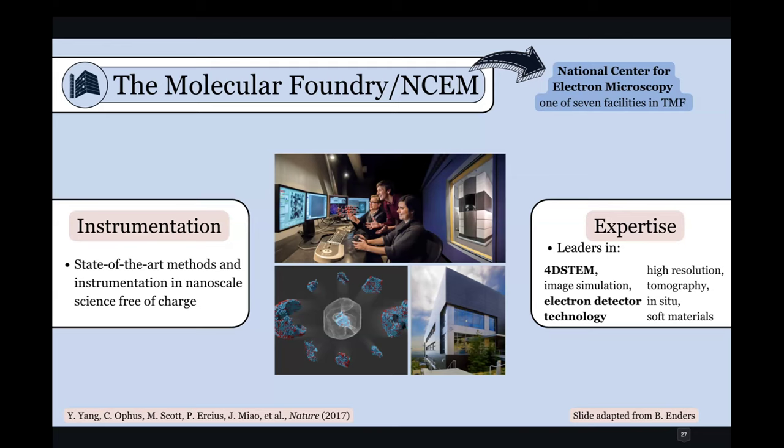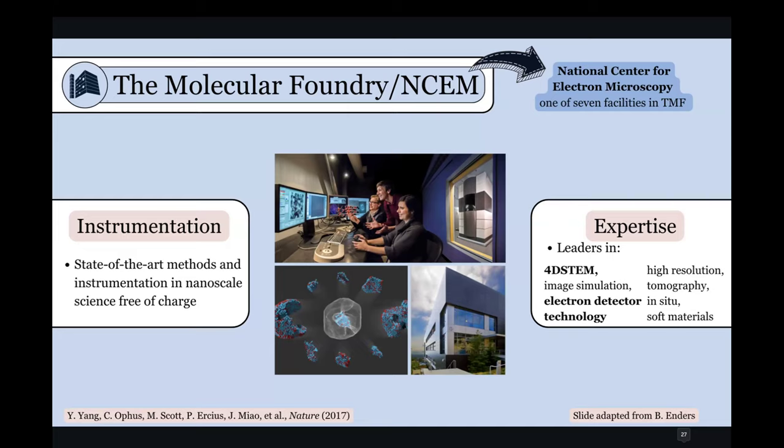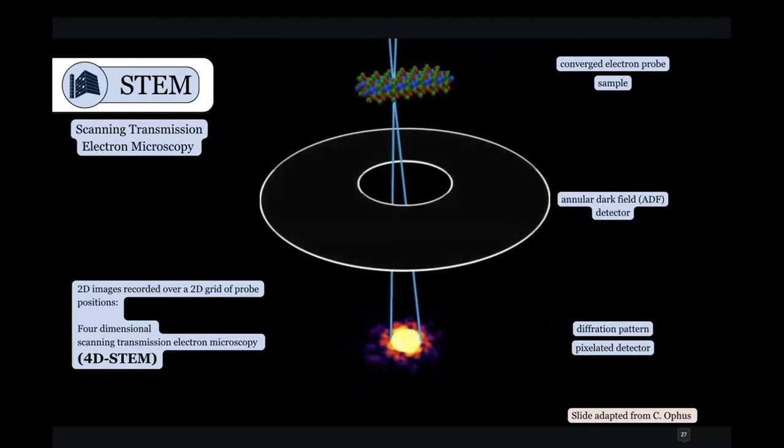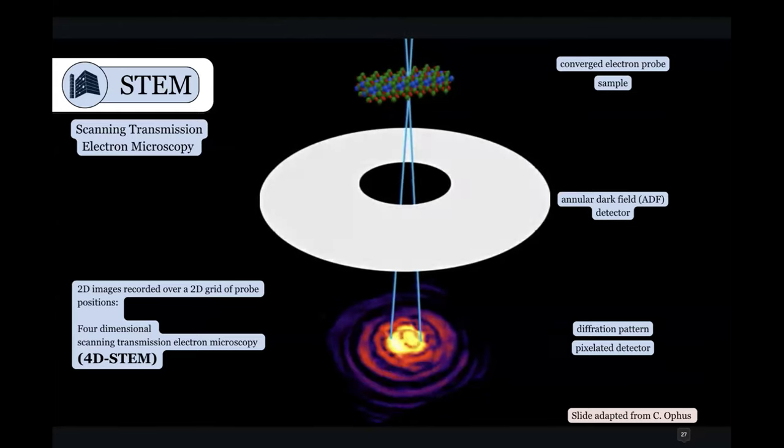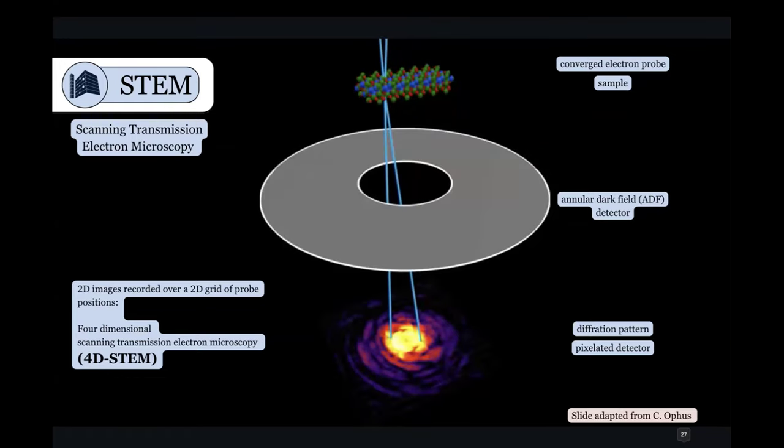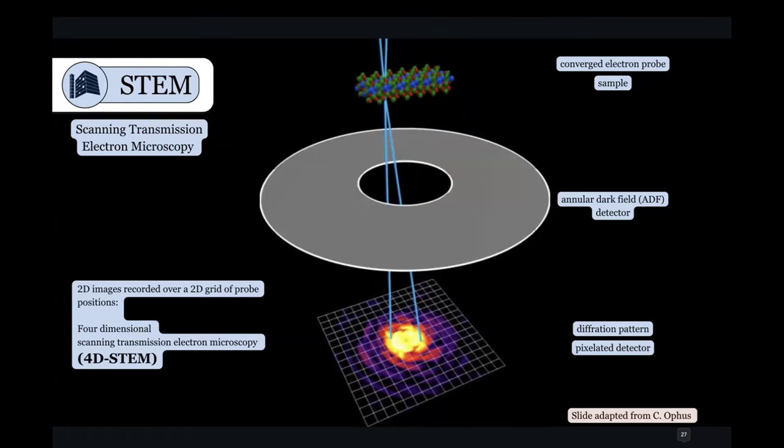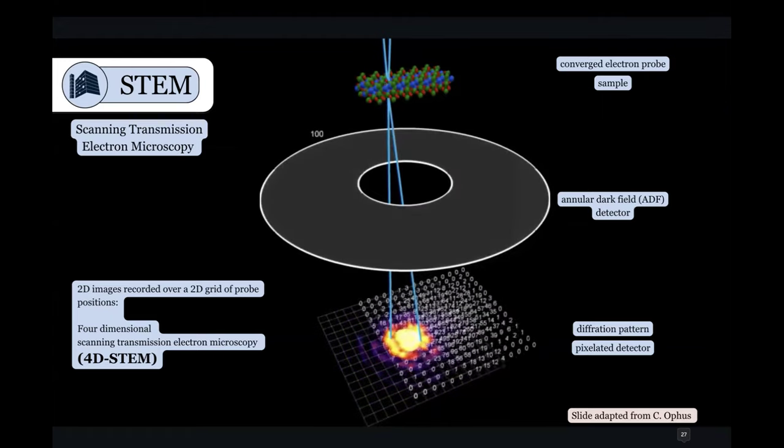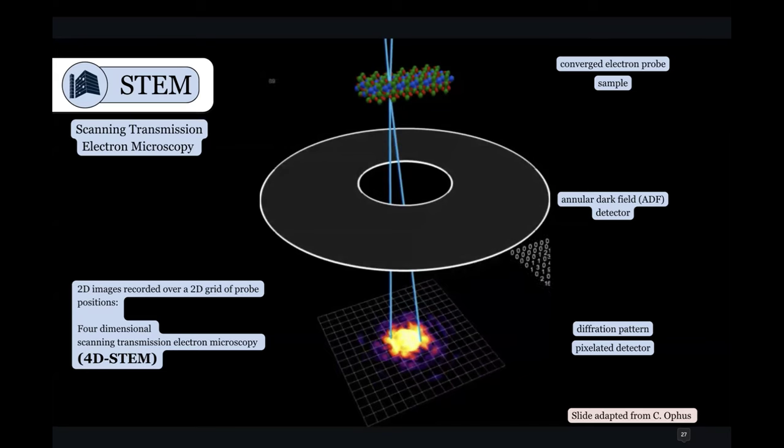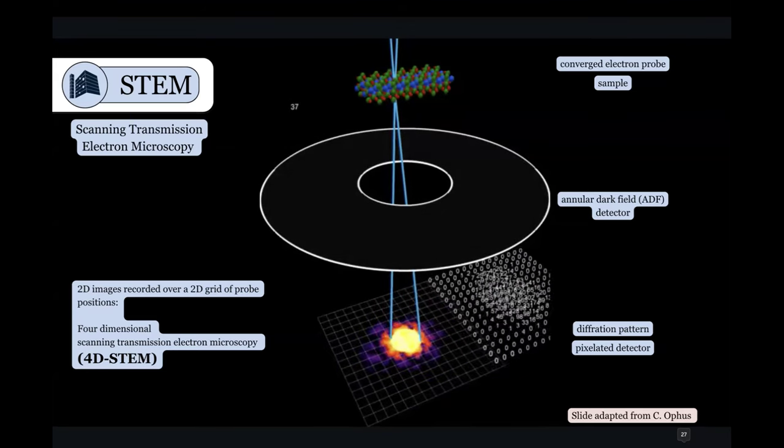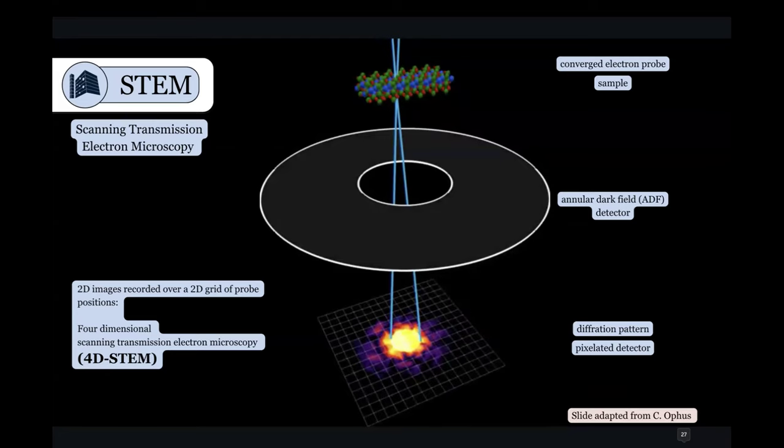And before you understand 4D STEM, you have to know what STEM is. So STEM, which is scanning transmission electron microscopy, is a technique where you put your sample into a vacuum chamber, and then you focus an electron probe onto the surface of that material. And then you raster that electron probe across the sample, and you put detectors at various locations below or around that sample.